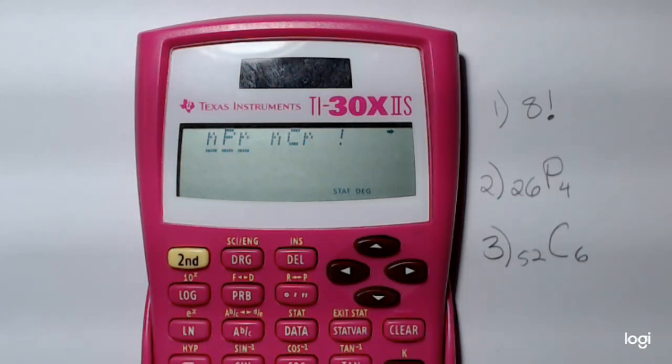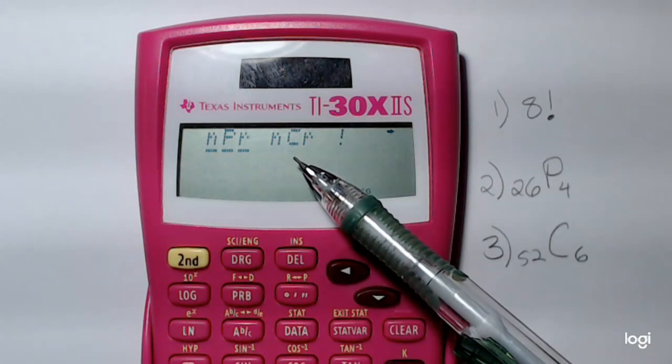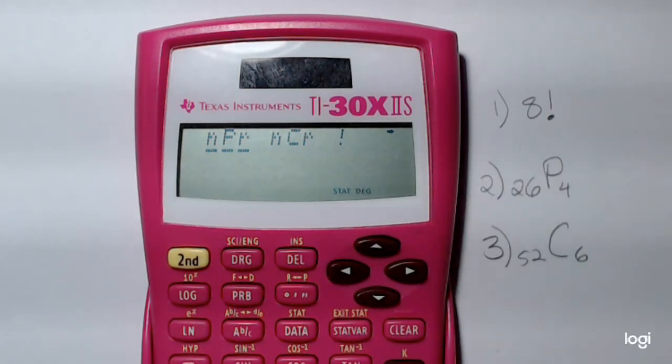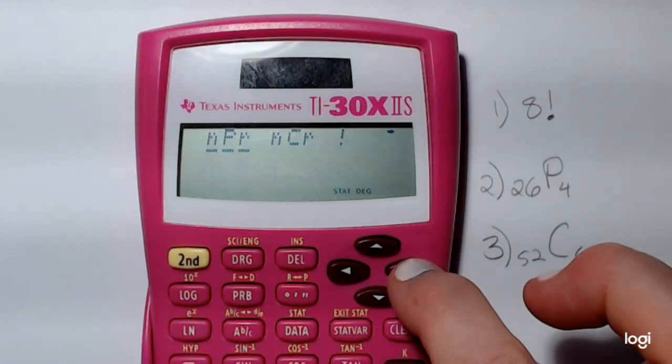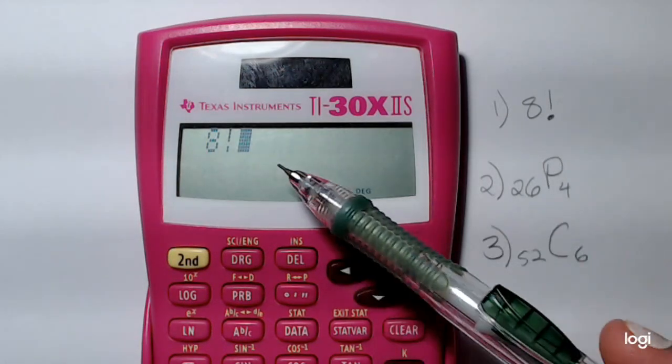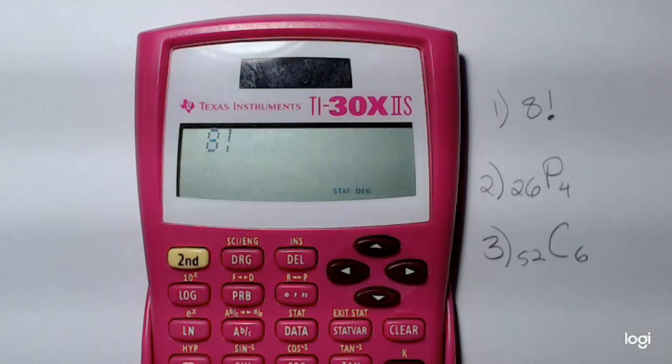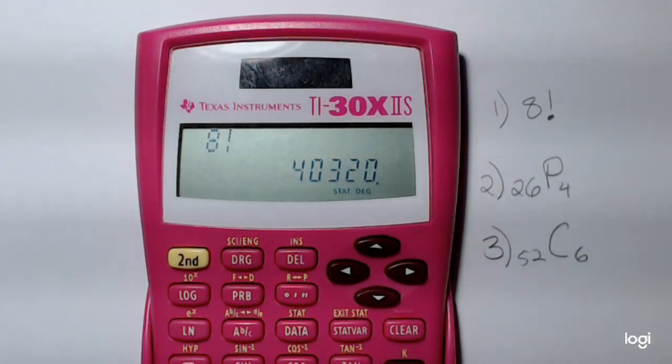You'll see three options: N permute R, N choose R, and this exclamation point, which is the factorial. I want to use my right arrow button over to factorial, then press enter, and it carries it back to the home screen, and press enter again. So 8 factorial is 40,320.